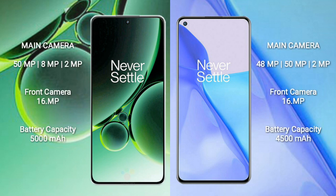The OnePlus Nord 3 has a rear triple camera setup of 50MP plus 8MP plus 2MP, and a 16MP front camera. The OnePlus 9 has a rear triple camera setup of 48MP plus 50MP plus 2MP, and a 16MP front camera.